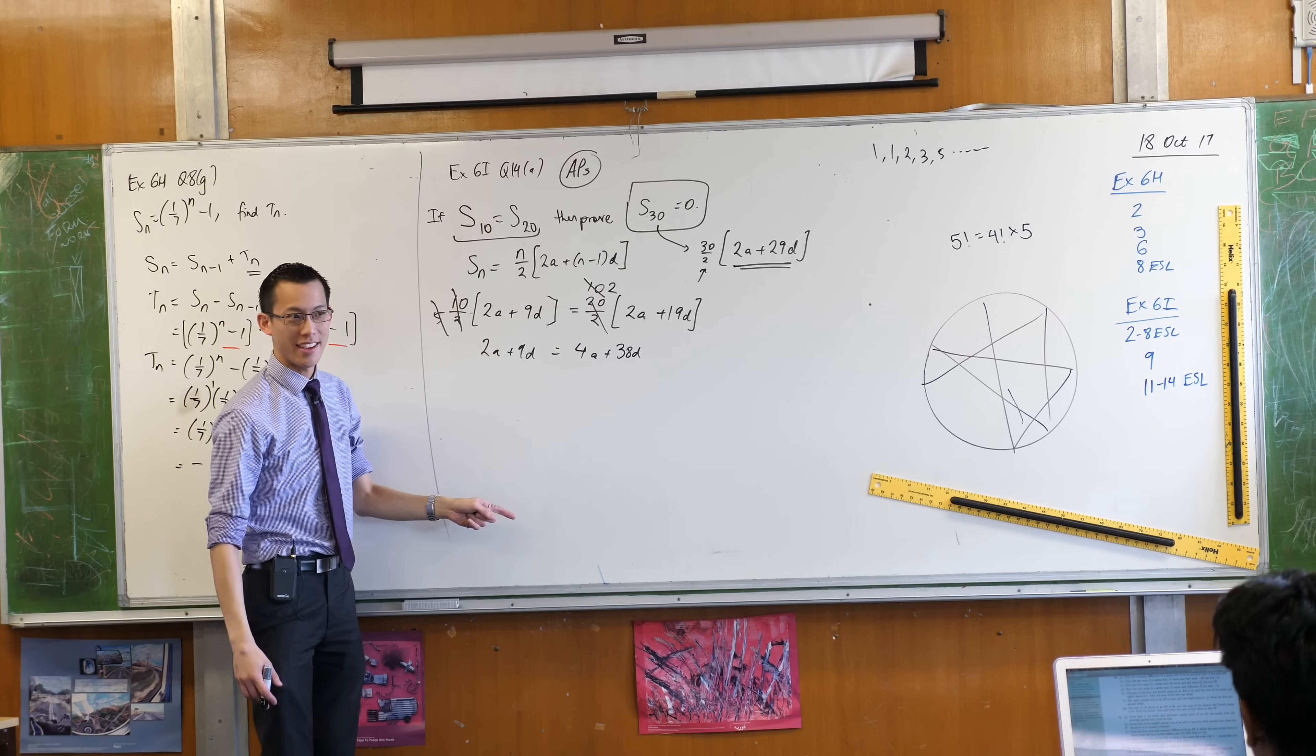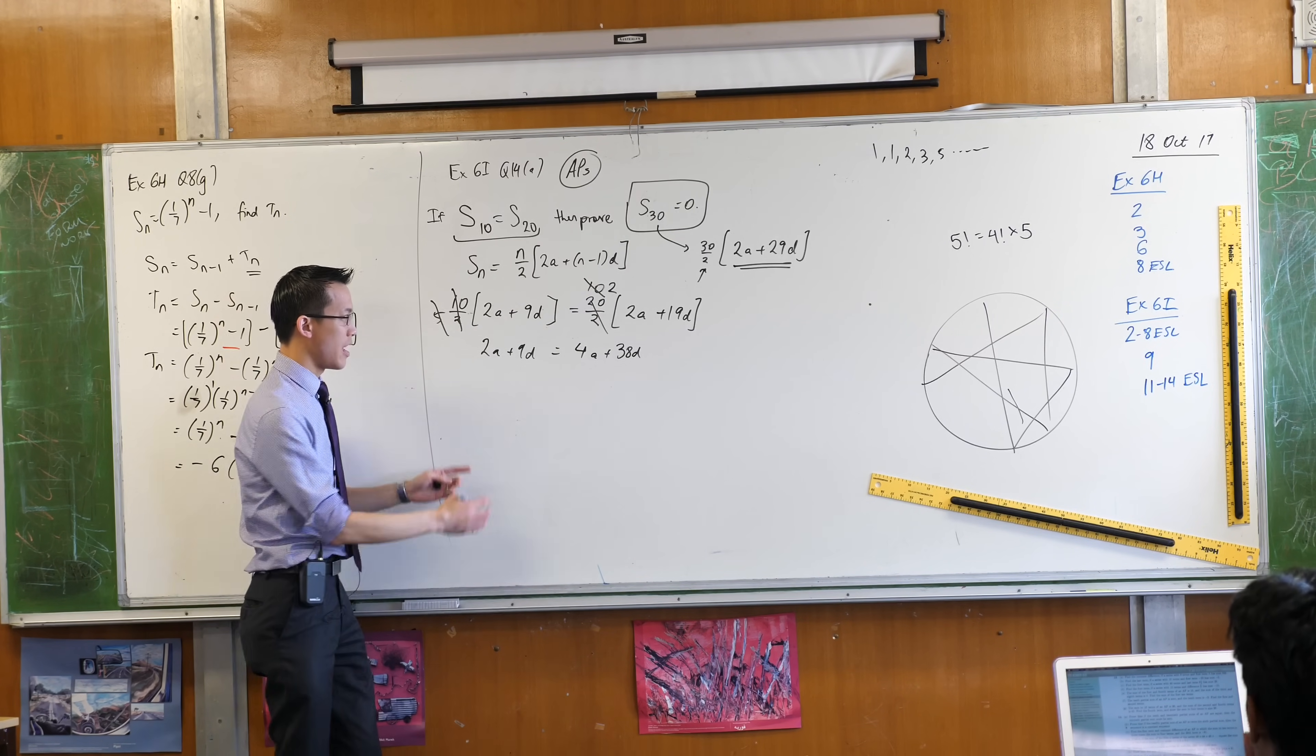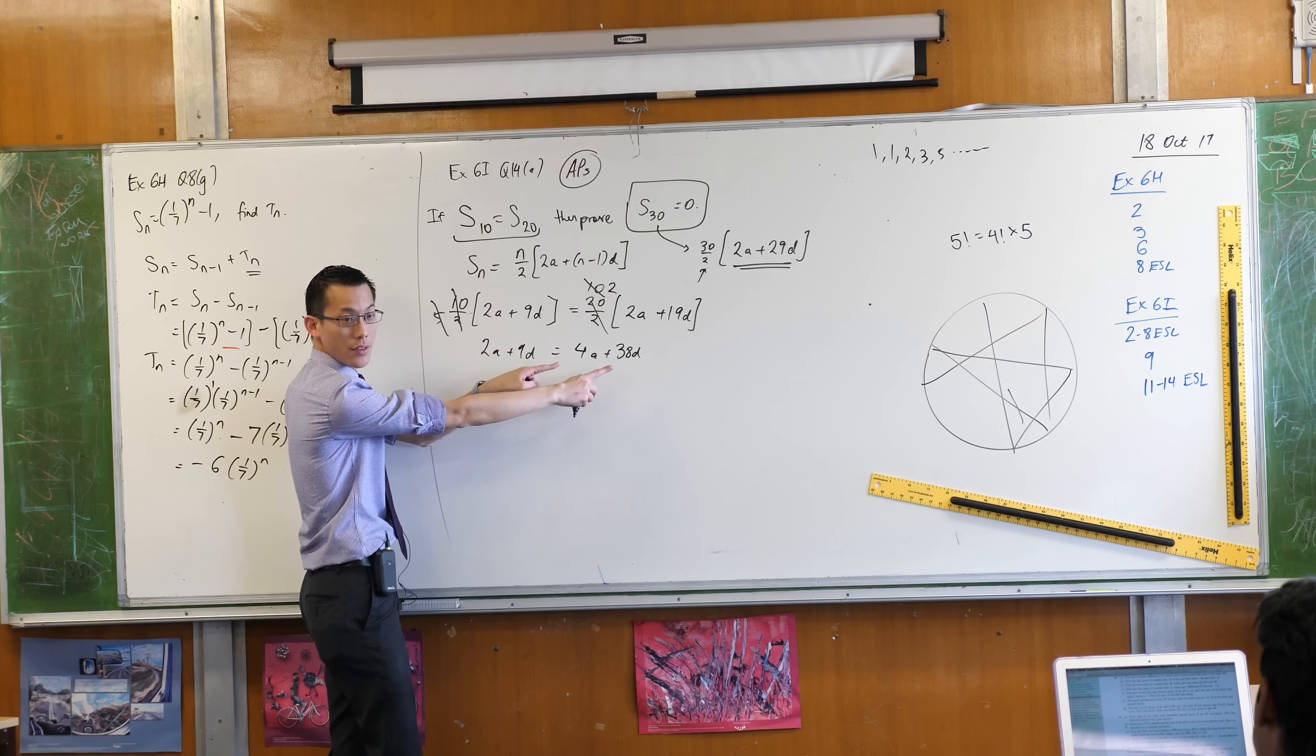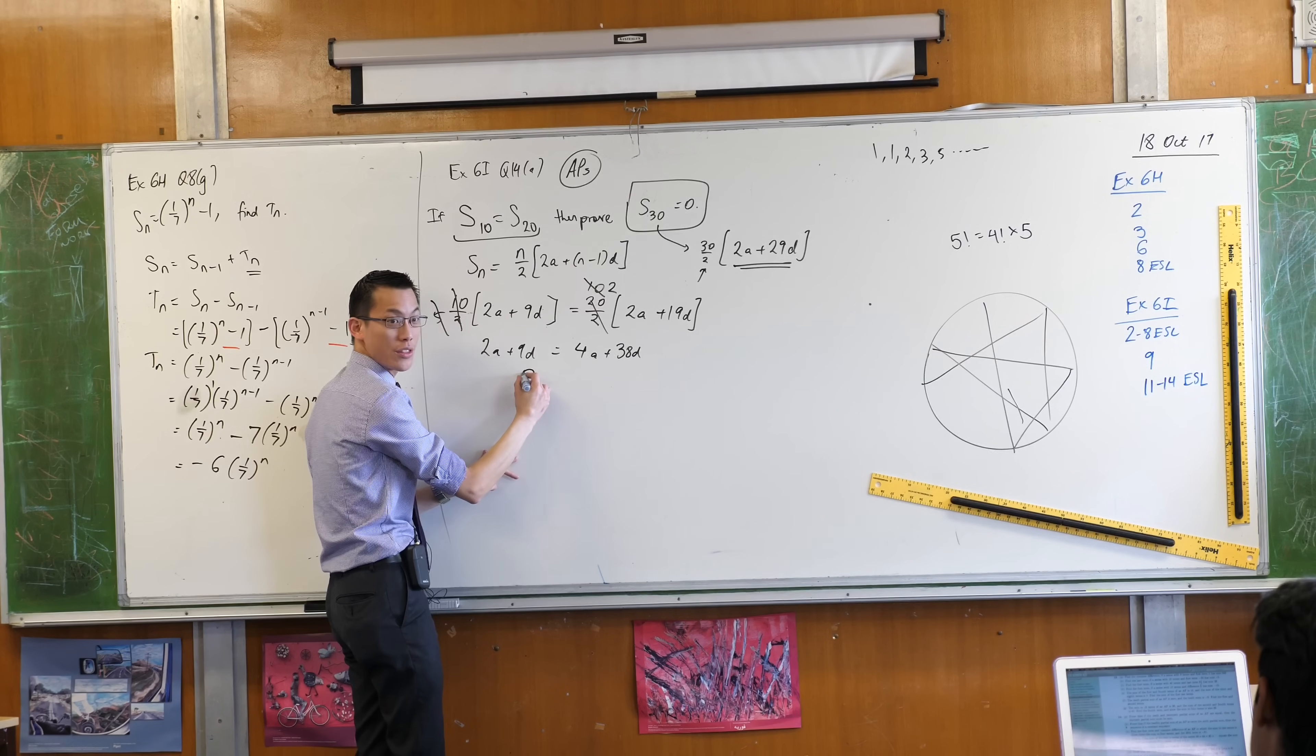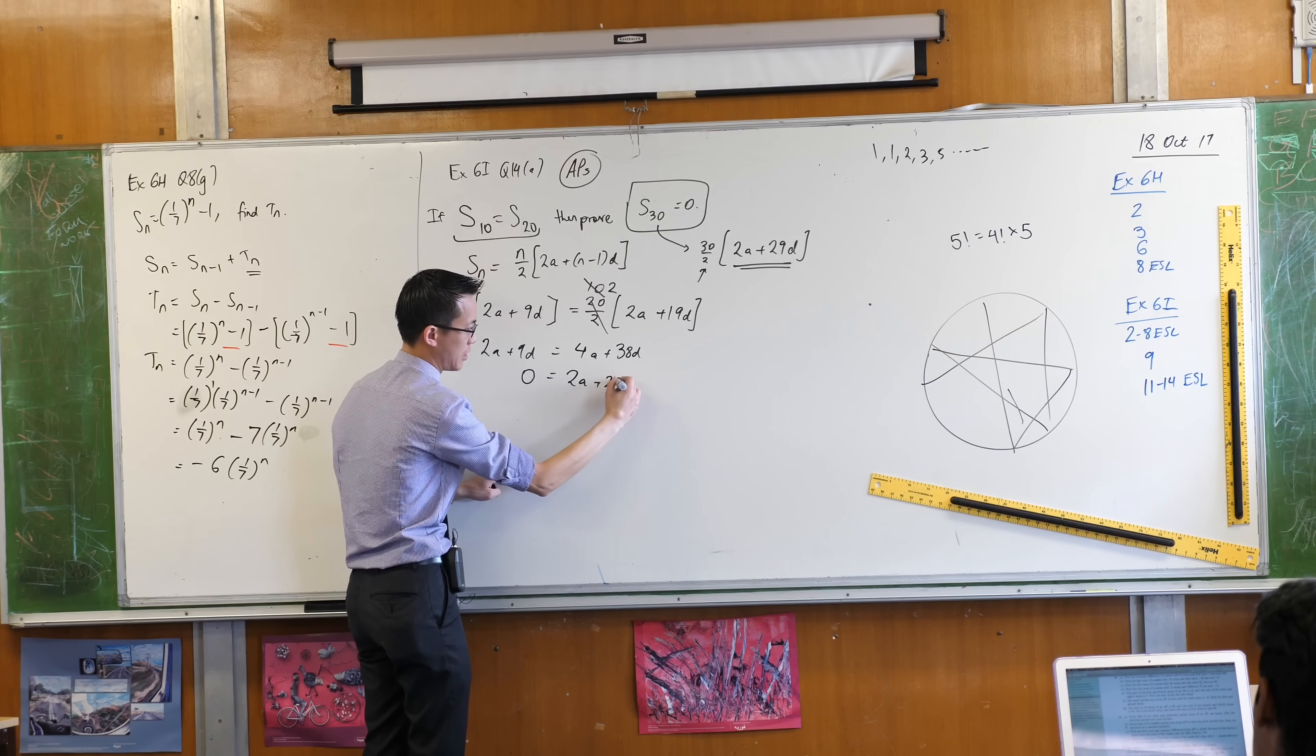So what do I do? If I put it all on the right-hand side, subtract all this over there, then you're going to be left with zero on this side and 2a plus 29d.